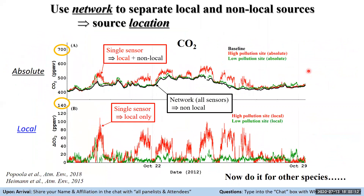With a high-density, high-temporal-resolution sensor network you can begin to disentangle the signals measured at each receptor point. What we've done is taken one species — in this case CO2 — from two sites: a very polluted and a low-polluted site, and separated the contributions coming from non-local sources, represented in black. Once you've removed that signal across all sensor measurements, you get the residual — the local fraction — for these two sites. I've also highlighted the range of measurements for context. You can do this for all species, and it's important when we start looking at emission indices.